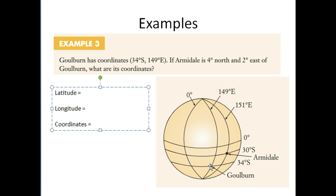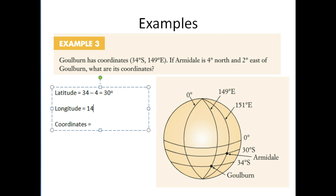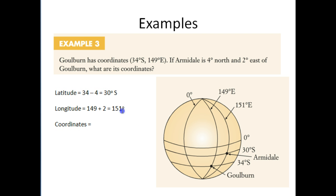I've drawn a nice diagram for us. We're going up towards the equator, so we actually need to subtract 4 degrees from 34 degrees south. So, 34 minus 4 gives us 30 degrees south, which you can see in our diagram. Now, the longitude is continuing to the east, so we need to add 2 degrees on there. So, 149 plus 2 degrees gives us 151 degrees east.